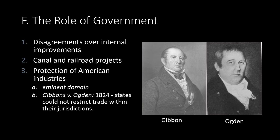State governments as well as private investors funded developments in transportation, although there were heated political debates regarding the constitutionality of using federal funds for such purposes. The federal government purchased stock in turnpike and canal companies and made land grants to western states to aid the development of canals and railroads. States provided money while the national government supplied land and other services — half of all capital for early railroads came from state governments.